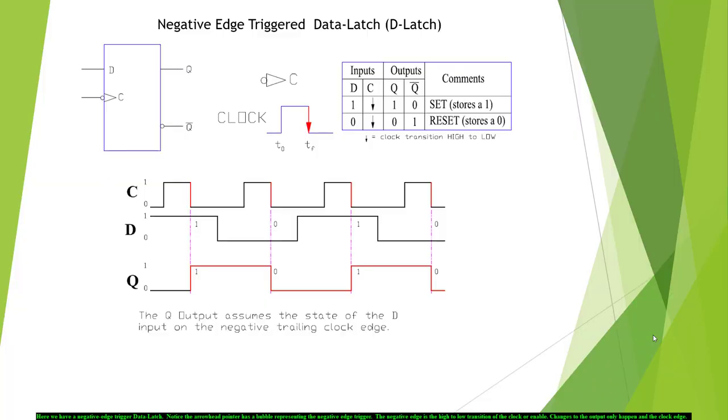Here we have a negative edge trigger data latch. Notice the arrowhead pointer has a bubble representing the negative edge trigger. The negative edge is the high to low transition of the clock or the enable. Changes to the output only happen at the clock edge.